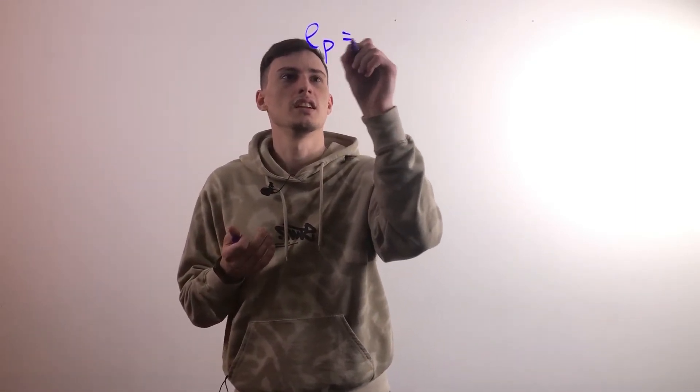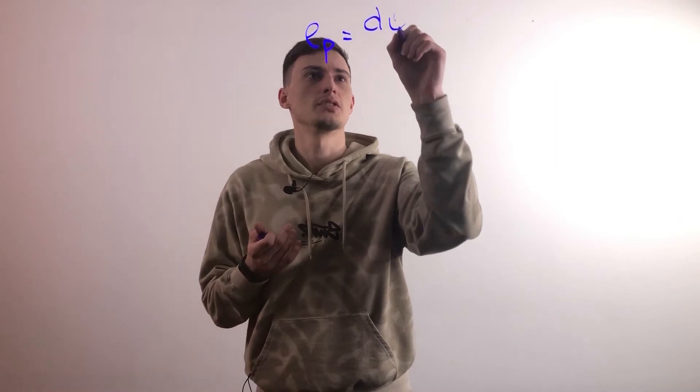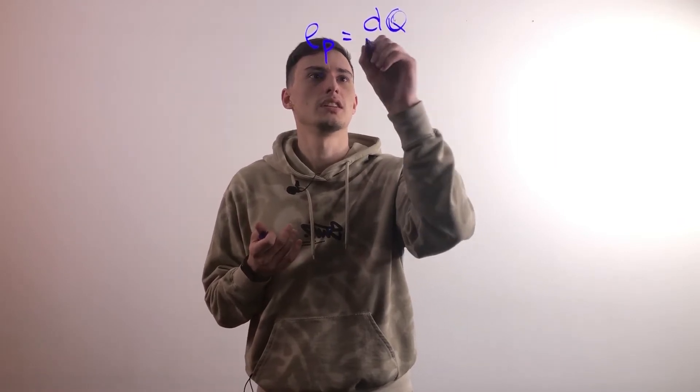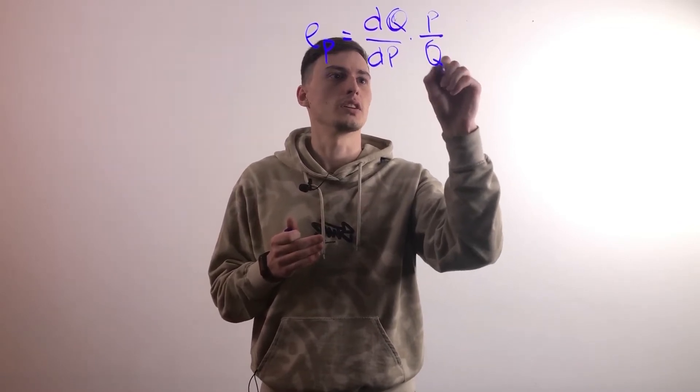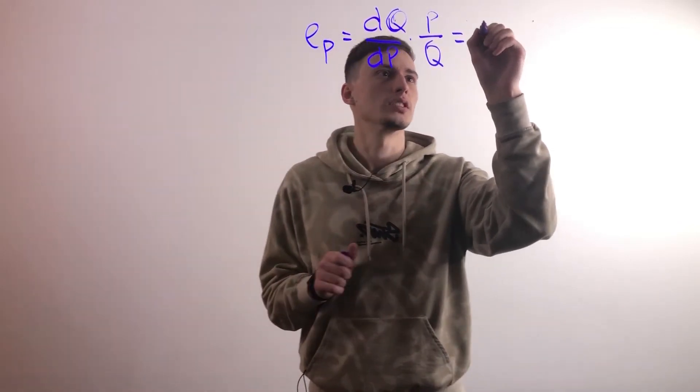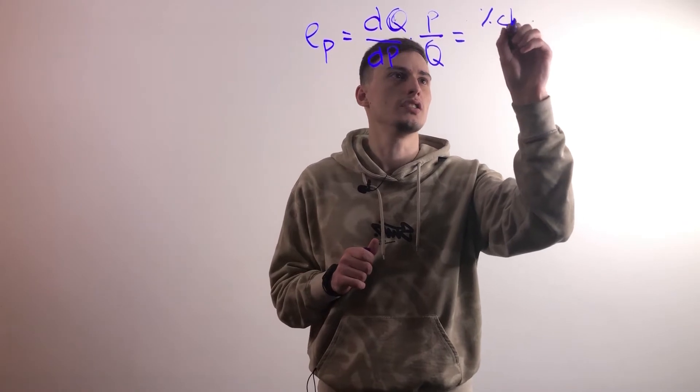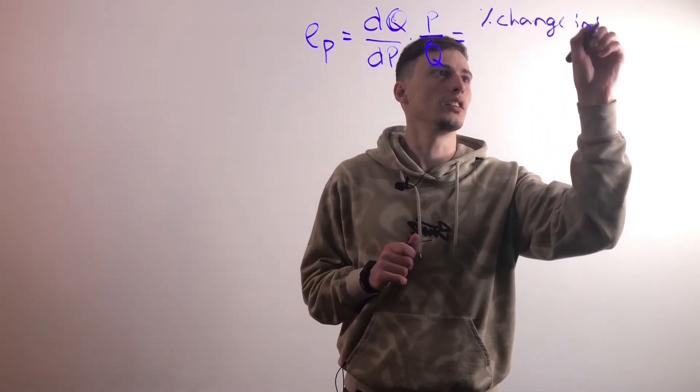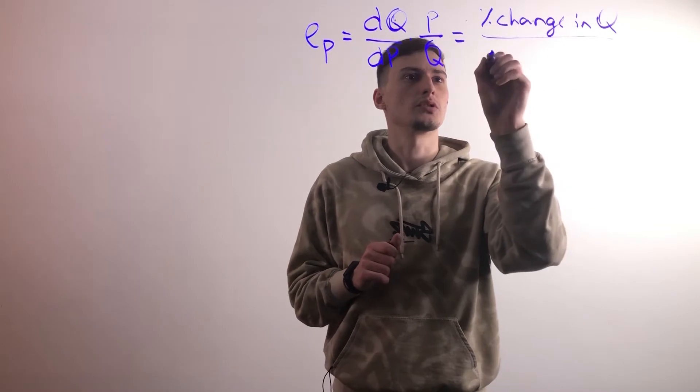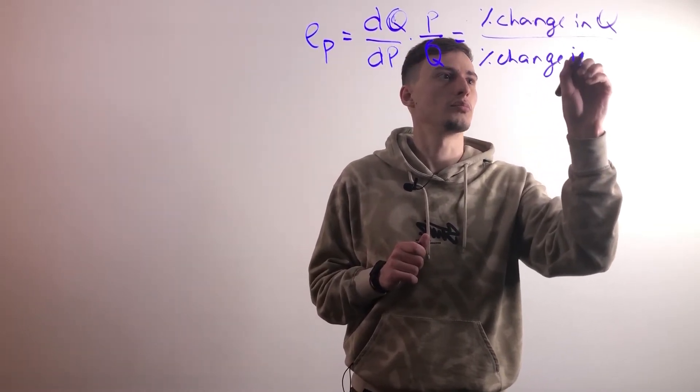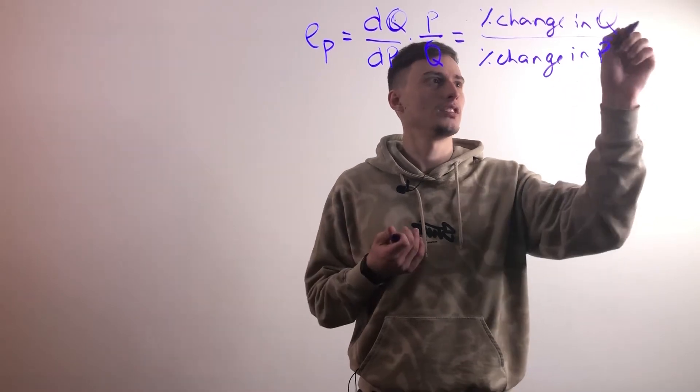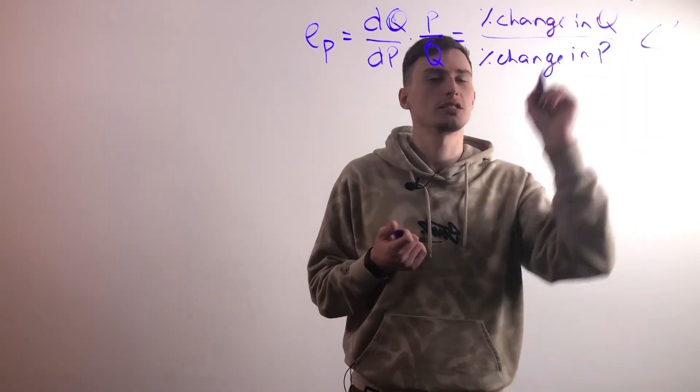So the definition of elasticity, this might seem a little confusing, it'll be the first derivative of quantity times price over quantity. Or in simpler terms, it's the percent change in quantity divided by the percent change in price. Now this is really the definition I like more, the second one, so that's the one that we'll be talking about.